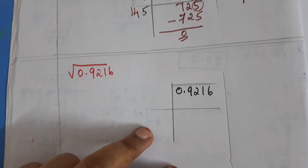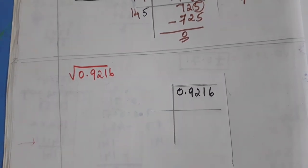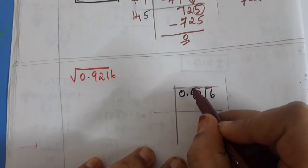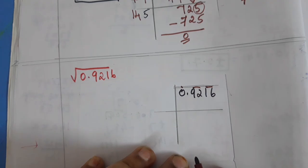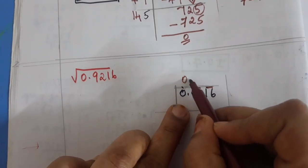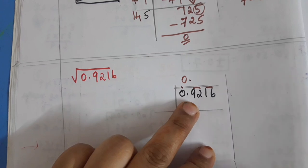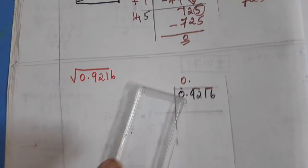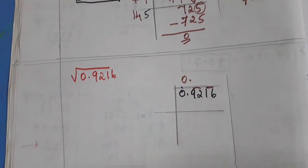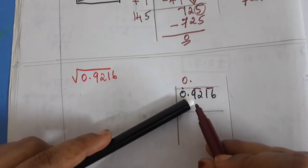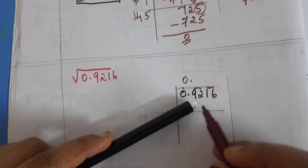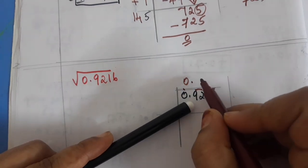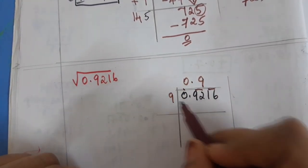Next number is 0.9216. Procedure is the same — group from the right side, two digits per group. Single digit zero, so directly write zero point and take 92. Now 92: square number nearer to 92 — nine nines are 81, ten times ten is 100. 100 is greater than 92, so we take 9: nine nines are 81.